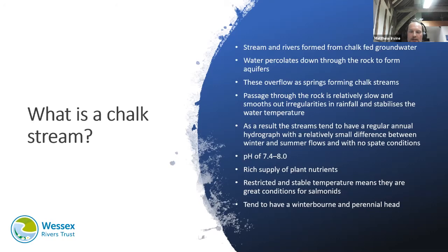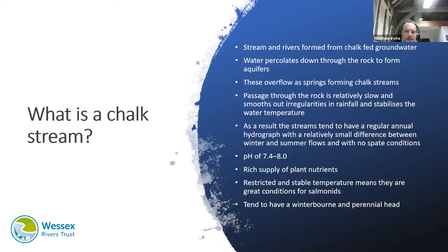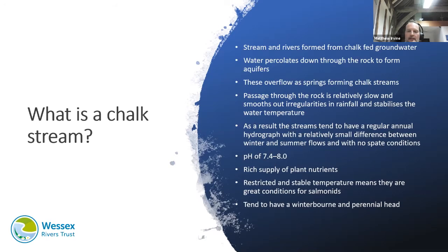The temperature range in chalk streams remains relatively constant and cool all year round, closer to the annual mean than in most rivers receiving more surface runoff. The water is calcareous, with a pH of around 7.4 to 8, and an ample supply of plant nutrients. This means the streams support diverse and productive communities of plants and animals, and the restricted temperature range is particularly suitable for the growth of salmonids such as the brown trout.